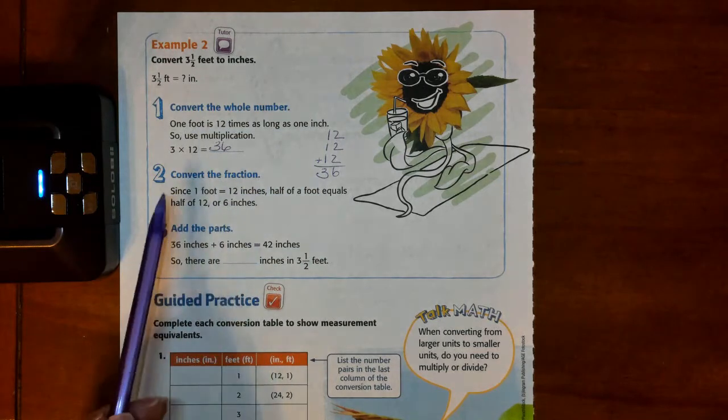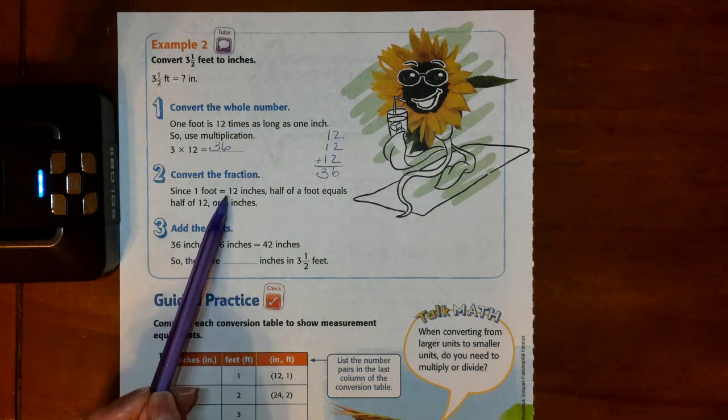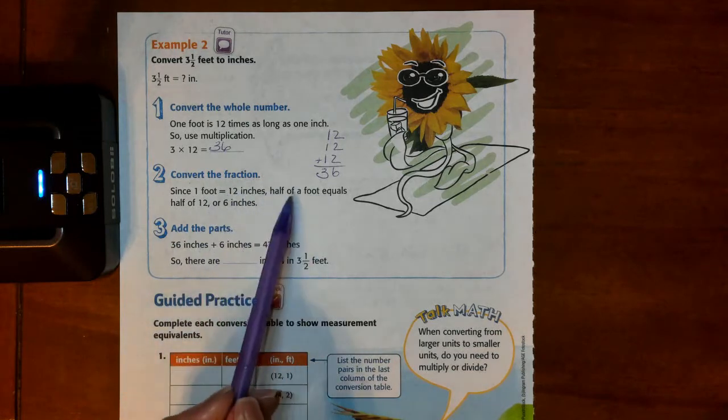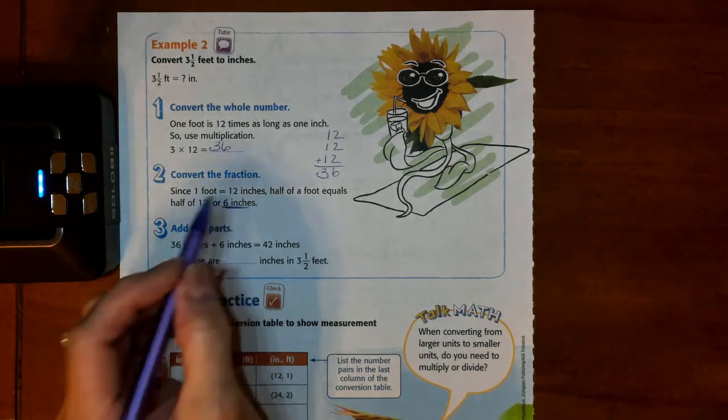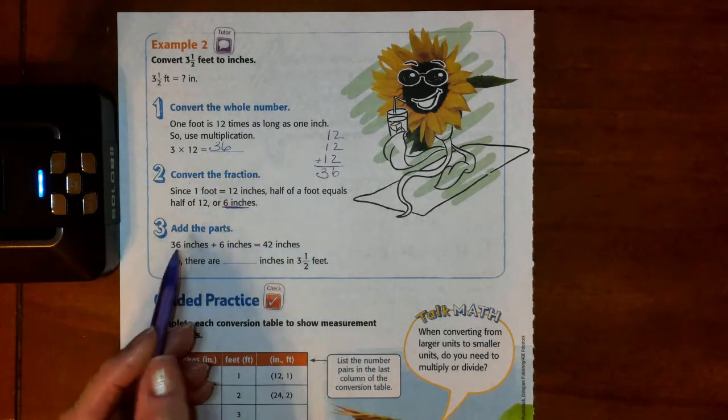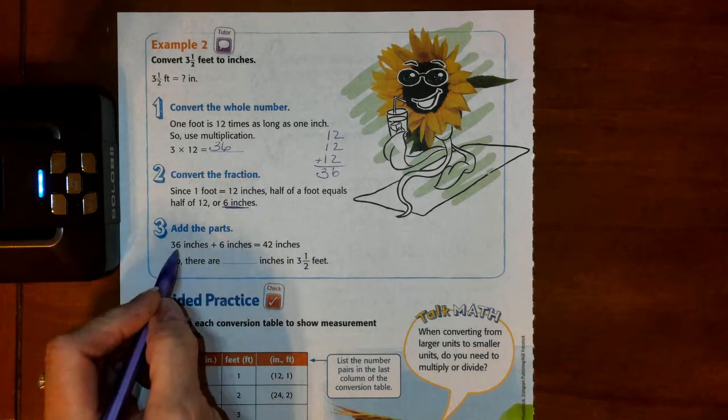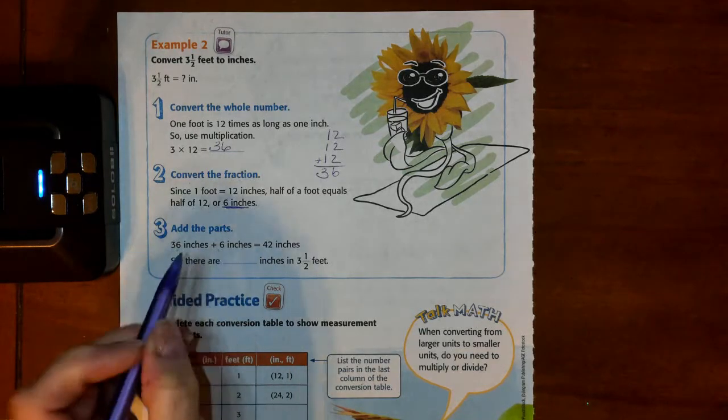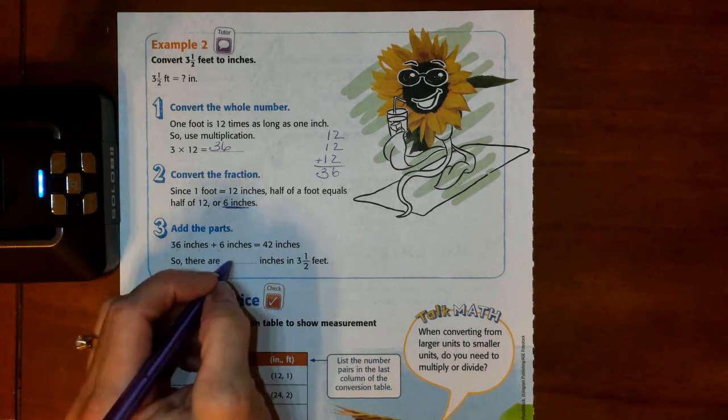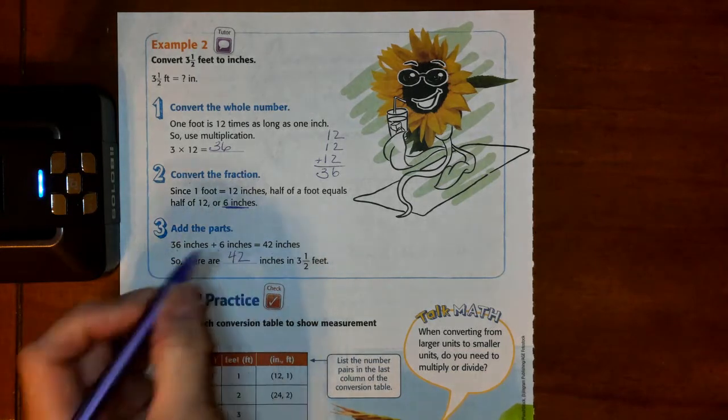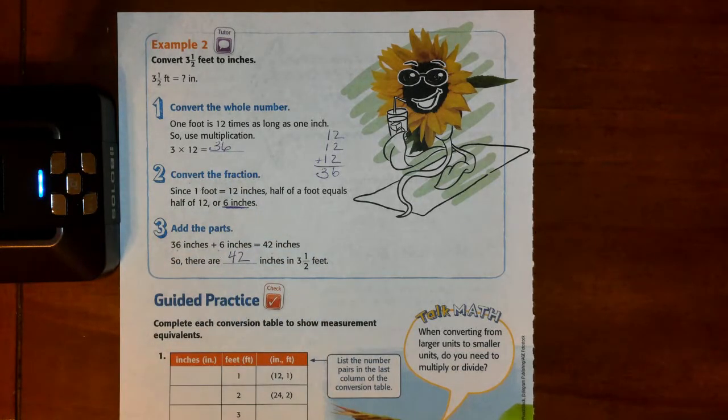Now we're going to convert the fraction. Since 1 foot is 12 inches, half a foot is 6 inches. So now we're going to add those two parts. We're going to add our 36 plus our 6. And that gets us 42 inches. So there are 42 inches in 3.5 feet.